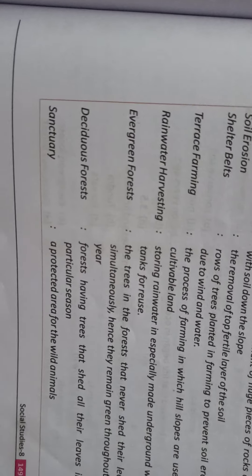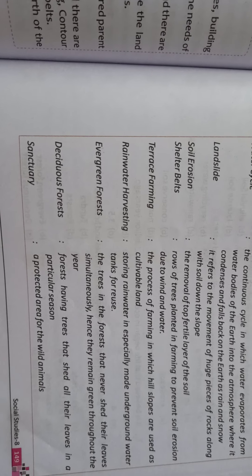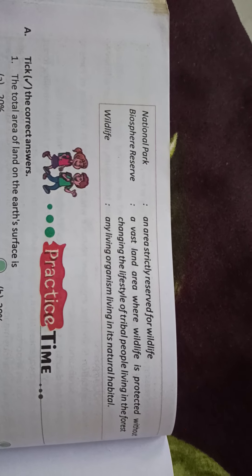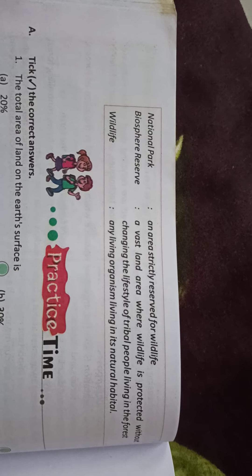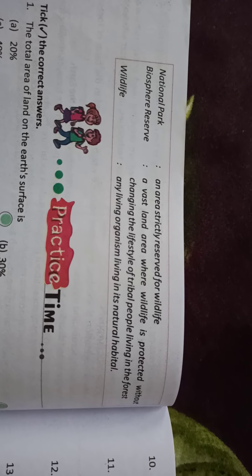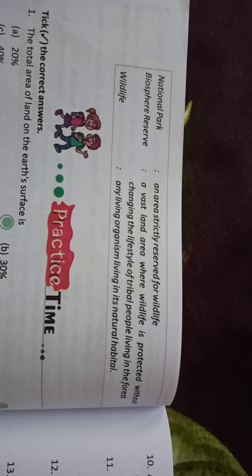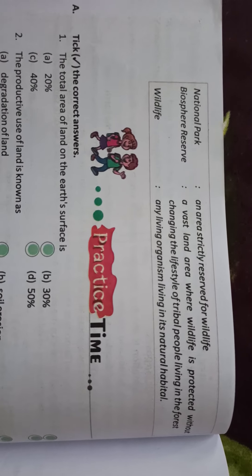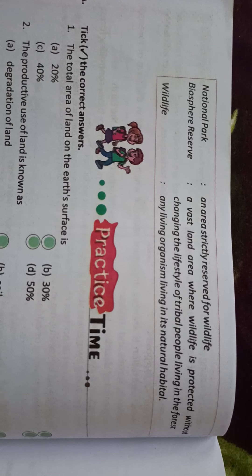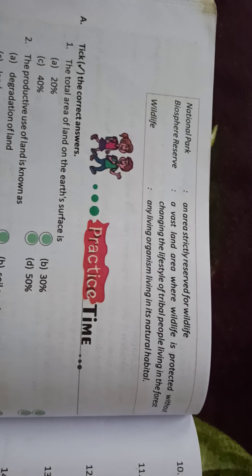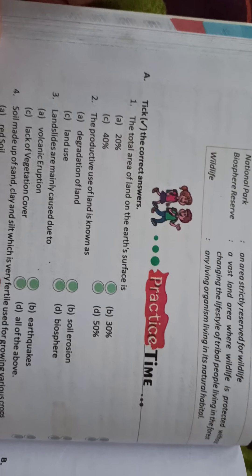Sanctuary: a protected area for wildlife animals. Wildlife ke jo animals hain unke liye protected area, which we call a sanctuary. National park: an area strictly reserved for wildlife. National park ek area hota hai jo wildlife ke liye reserved ho. Biosphere reserve: a vast land area where wildlife is protected without changing the lifestyle of tribal people living in the forest. Wildlife: any living organism living in its natural habitat. Koi bhi organism jo apni natural habitat mein raha hai, usse wildlife kehte hain. Tomorrow in the next video we will study the question answers. Thank you.